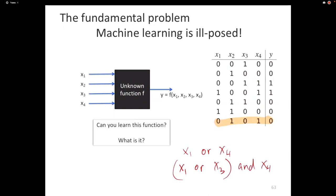Here's a fun question: how do you know you're right? There are seven rows here — it's not just about fitting those seven rows, but getting the right answer on the missing examples, on all the instances that may show up in the future. Let's think this through.